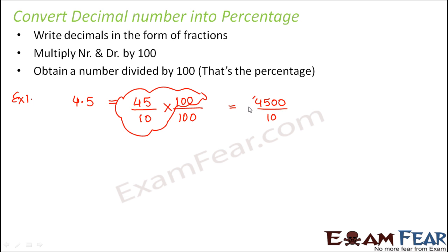So 45 by 10 multiplied by 100 over 100. This divided by 100 can be written as percentage. So this is equal to 450%.